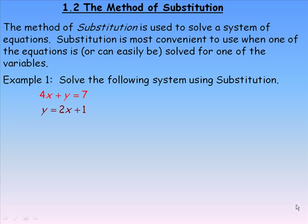This lesson will demonstrate how to use the method of substitution to solve a system of equations. There's more than one way to solve a system of equations. A system of equations is two or more equations where we're trying to find a common value for the variables x and y that satisfies both equations. The method of substitution is most convenient when one of the equations is already solved for one of the variables, x or y, or can easily be solved for one.